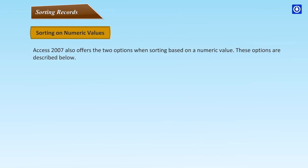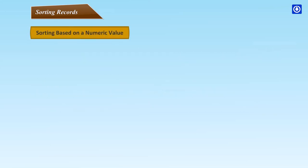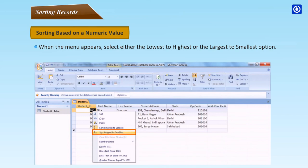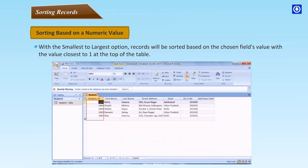Sorting on Numeric Values: Access 2007 also offers two options when sorting by numerical value. Smallest to Largest (Ascending): values closest to one are displayed first. Largest to Smallest (Descending): values furthest from one are displayed first. To sort by numeric value, right-click on the field you wish to sort and select either Lowest to Highest or Largest to Smallest. Records will be sorted with the chosen value at the top of the table.